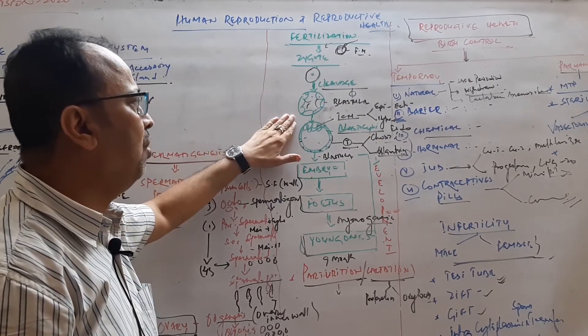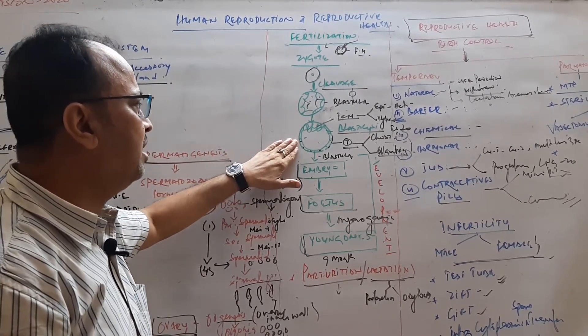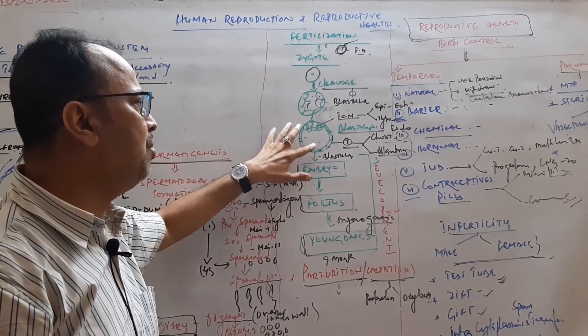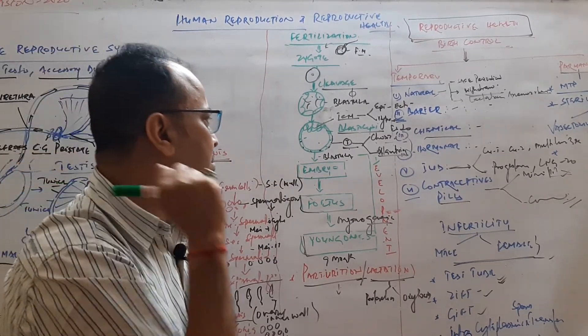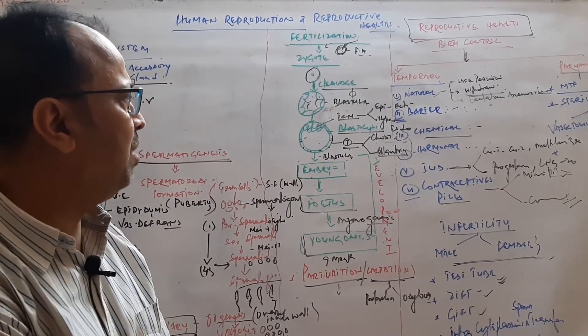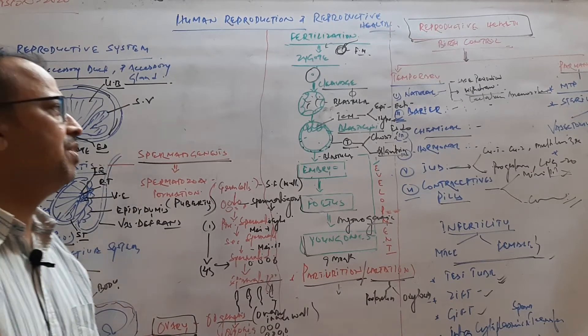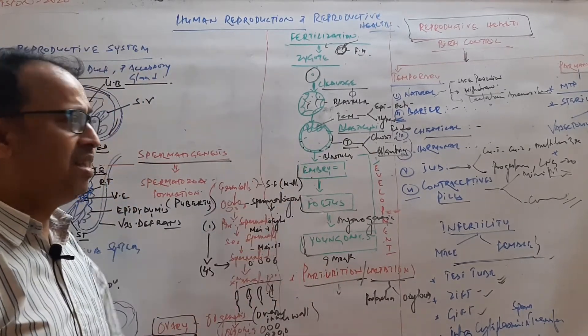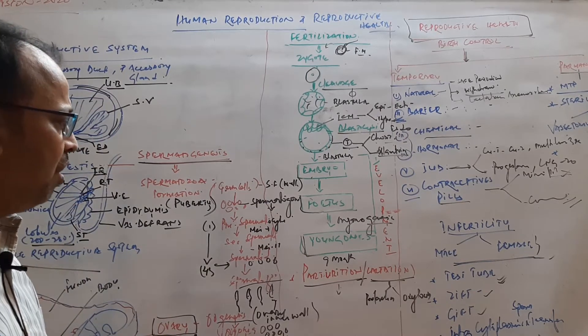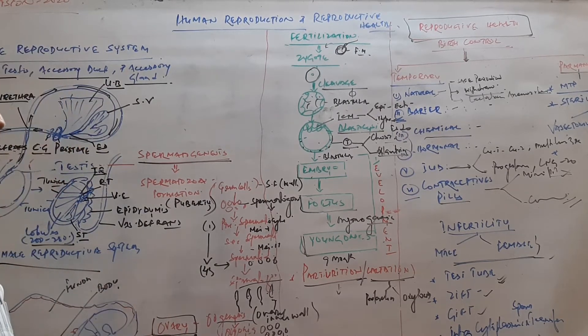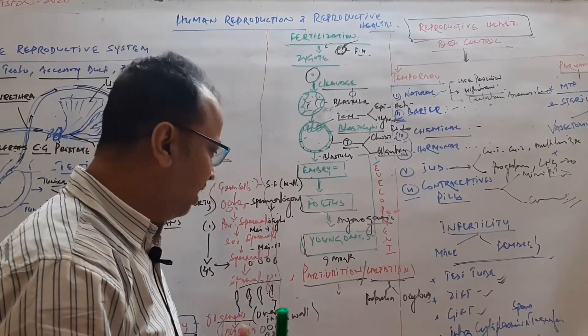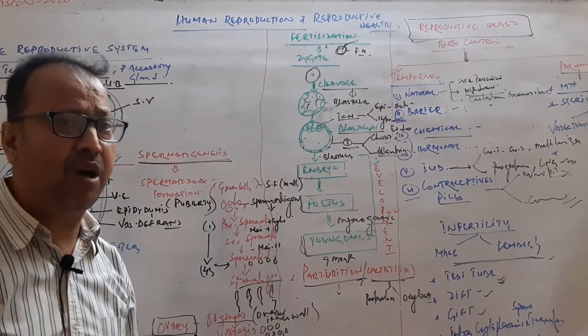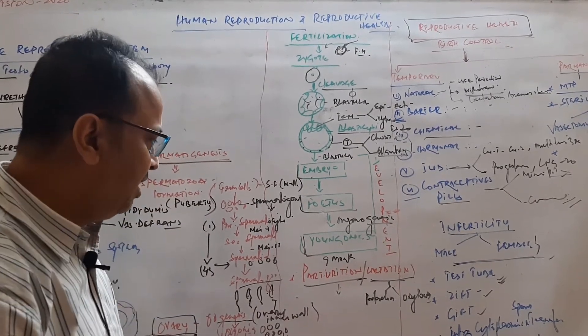Then the zygote and division starts through cleavage to form the blastula. Then a space is present called blastocyst. The blastocyst has two layers: outer layer trophoblast and inner cell mass. Inner cell mass develops into the embryo, and trophoblast forms the extraembryonic membrane. Inner cell mass differentiates into two layers: epiblast and hypoblast. Epiblast develops into ectoderm, hypoblast into endoderm, and trophoblast forms the mesoderm layer, which forms chorion and allantois. Then the embryo develops into the fetus to produce all primitive organs. After completion of the gestation period of 9 months in humans, the process called parturition occurs, where the baby is delivered.